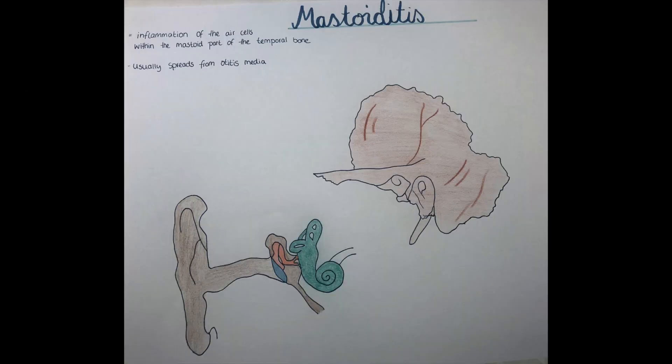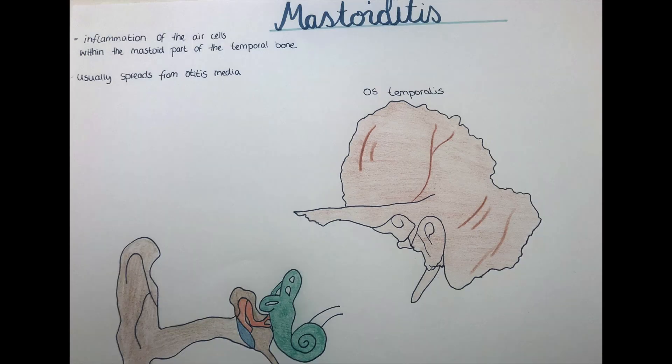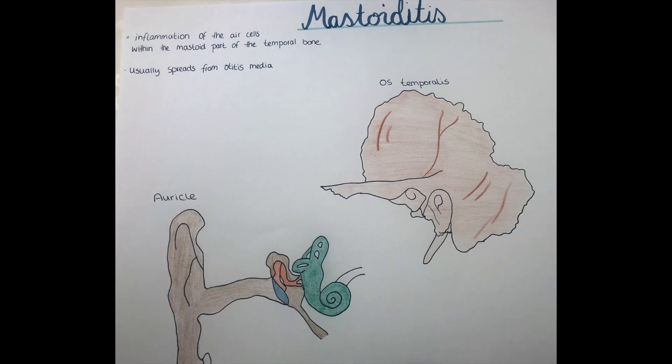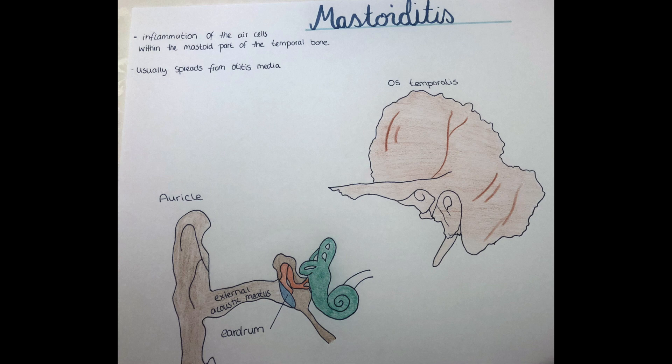To understand why this infection can be so dangerous, we need to look at some of the anatomy of the structures within and around the ear as well as the temporal bone. The ear lies on top and within the os temporalis, also known as the temporal bone. The outer ear is called the auricle or pinna, and it consists of skin and cartilage. It opens into the external acoustic meatus, which is a hollow passage leading into the eardrum.